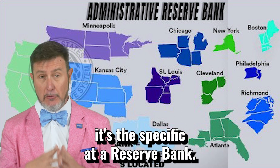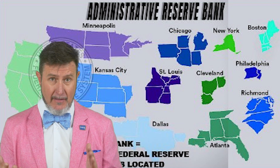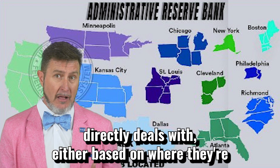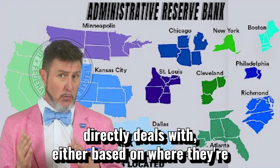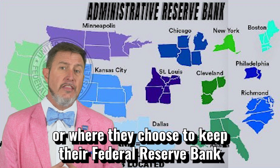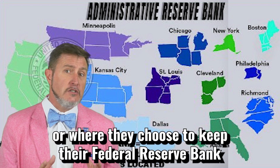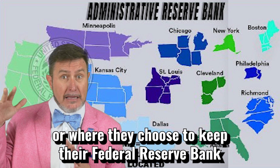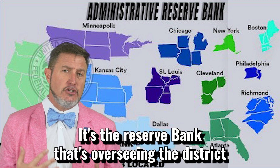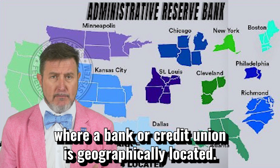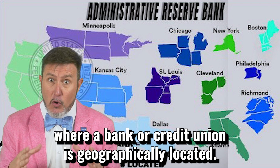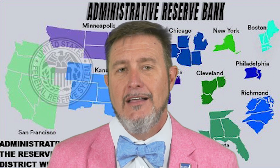Let me break this one down for you. The Administrative Reserve Bank is the specific Federal Reserve Bank — and there are 12 of them — that a financial institution directly deals with, either based on where they're geographically located, which is usually the case, or where they choose to keep their Federal Reserve Bank account.